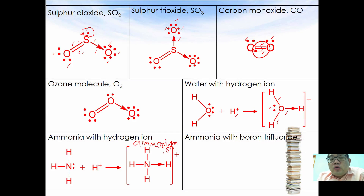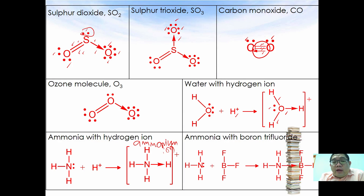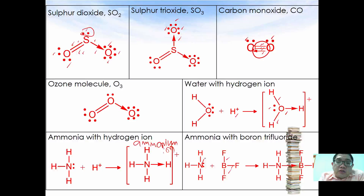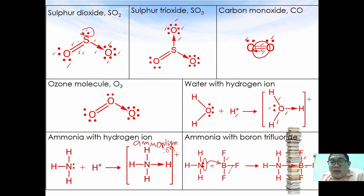Dative bond can also help electron deficient compounds. Boron trifluoride is one such electron deficient compound with only six electrons. By making use of the lone pair electrons from ammonia, the electron pair can be donated to boron, forming a complex of NH3BF3, allowing boron to achieve octet and making the complex stable.